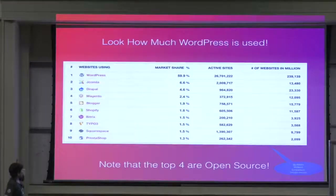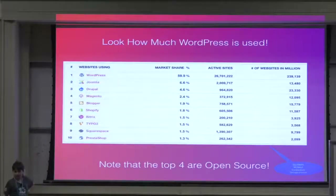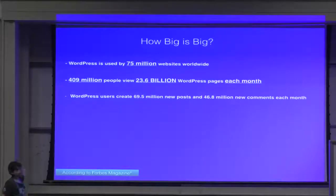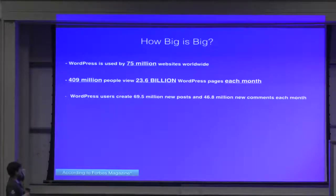Now in 2018, WordPress has around 59.9% market share. Its main competitor, Joomla, only has around 6.6%. WordPress is used by 75 million websites worldwide. It is used by 409 million people to view over 23.6 billion WordPress pages each month. WordPress users create 69.5 million new posts and 46.8 million new comments each month.